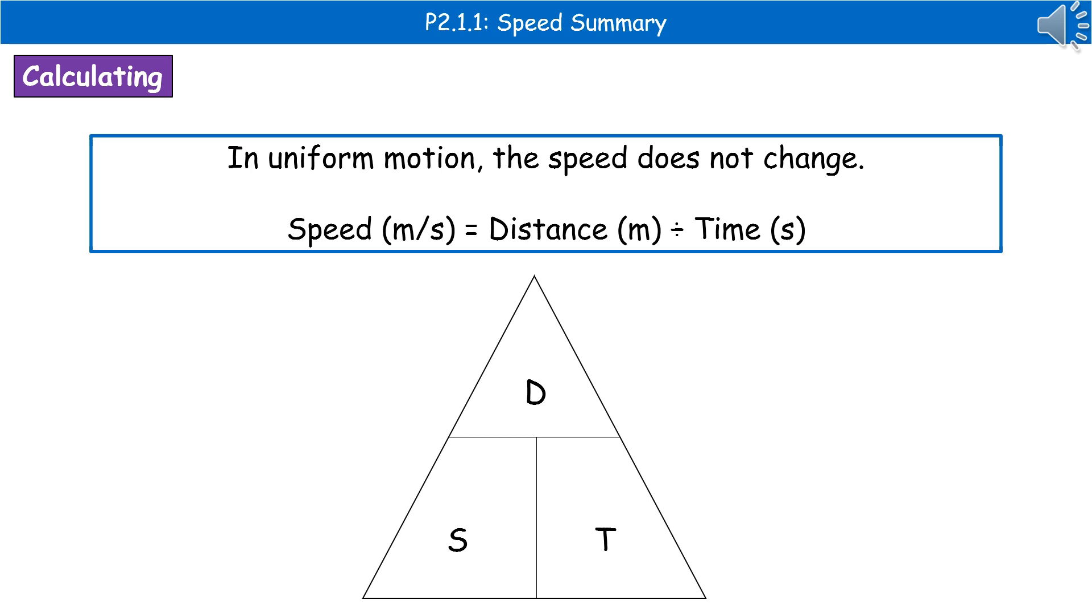When we consider motion, there are two types: uniform motion and non-uniform motion. In uniform motion, the speed does not change. To calculate the speed of uniform motion, we use speed equals distance divided by time. You can use a triangle to rearrange that in case you need to in the exam, but this is one of the equations you have to memorize.